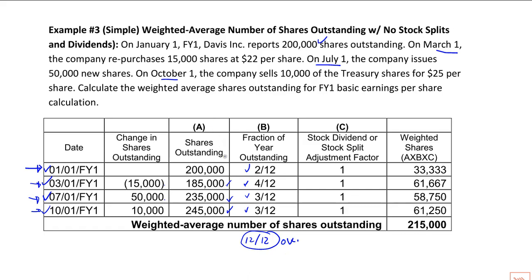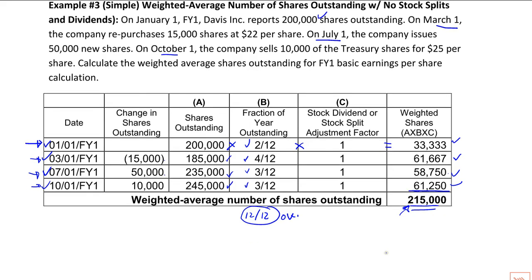Now we take shares outstanding, multiply by the fraction of the year outstanding, multiplied by a stock dividend or stock adjustment factor — I don't have one here but I included it for completeness — and that gives each row's contributing portion. Adding those up, the weighted basic average number of shares outstanding is 215,000.